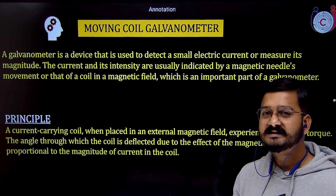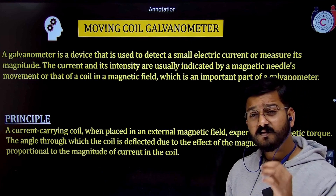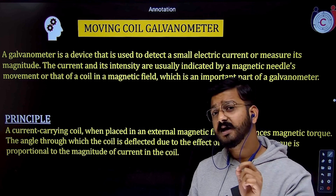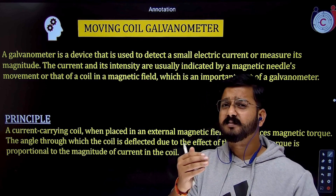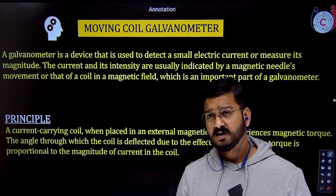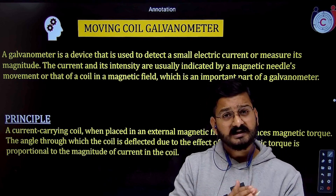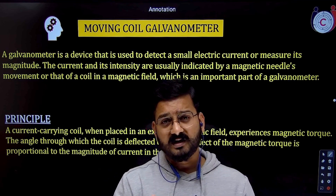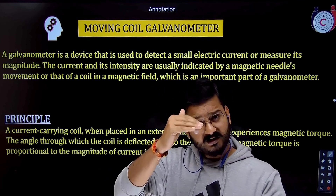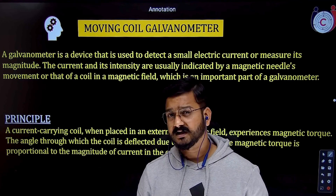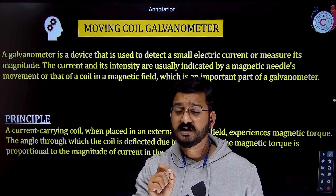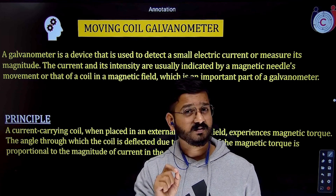A moving coil galvanometer is a device used to detect small electric currents — even the smallest amounts. Inside the galvanometer there is a needle which rotates: when you increase the current, the deflection in the needle also increases; when you decrease the current, the deflection decreases. The deflection in the needle is directly proportional to the amount of current passing through the galvanometer.